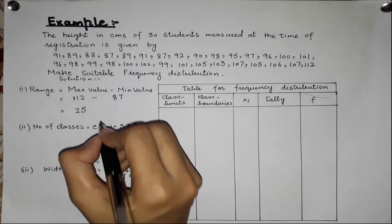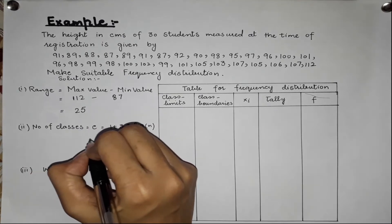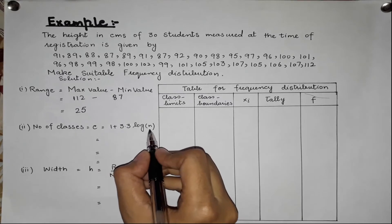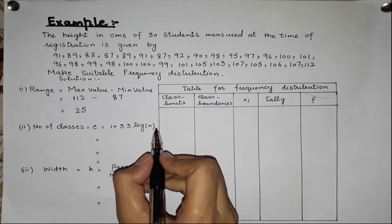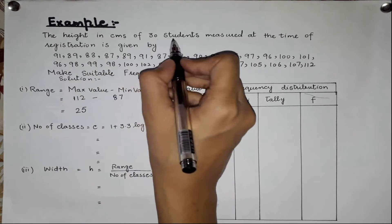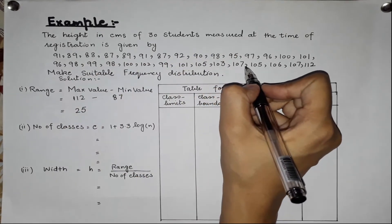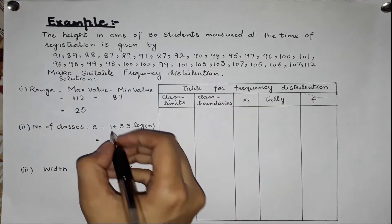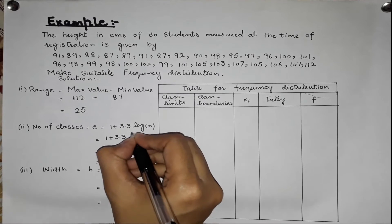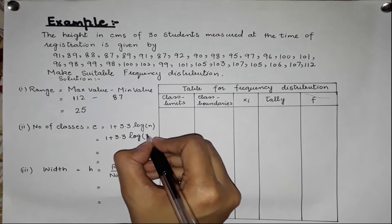Now we have to find the number of classes. The formula is 1 plus 3.3 times log n. Here, n is the number of students, which is 30. So we calculate 1 plus 3.3 times log of 30.